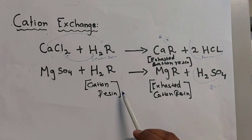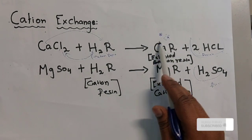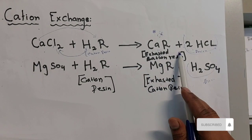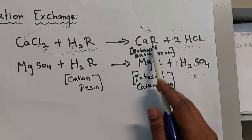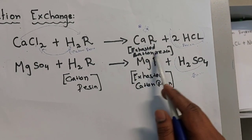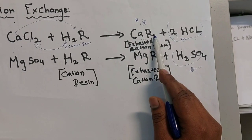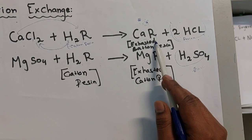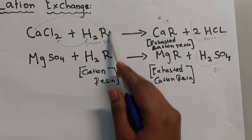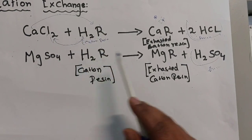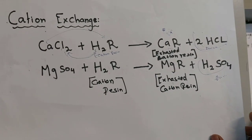Friends, this chart I already explained in my last video. You can see here we have exhausted resin — means all the cations are absorbed by the resin, so we are calling it exhausted resin. This exhausted resin, by using acid, we make regeneration and make it like a pure resin again. Now I will explain the regeneration chart.